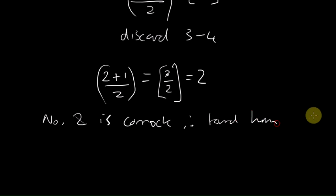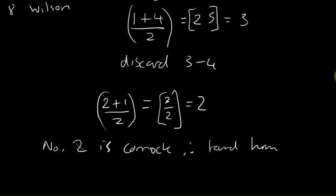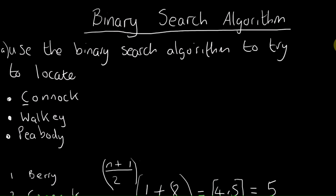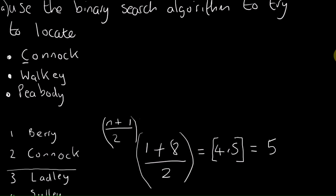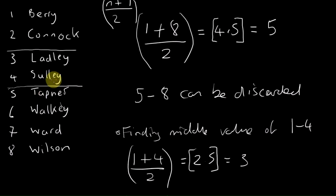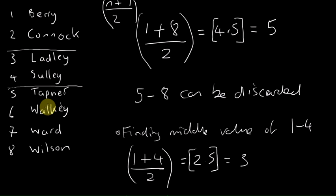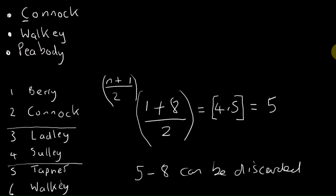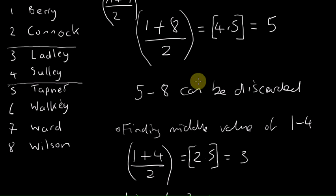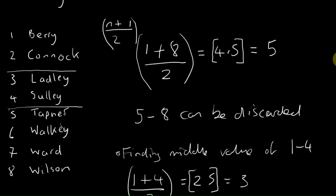A quick review: this was the binary search algorithm. The idea is to find a person — or any object — in a list, and to find out where they are. In other questions, they might ask you to find someone who isn't on the list at all, and there's a way to find that out which we'll look at later. We also wanted to find Walkie and Peabody, but I want to move on to another question since it's more of the same. See you in the next video.